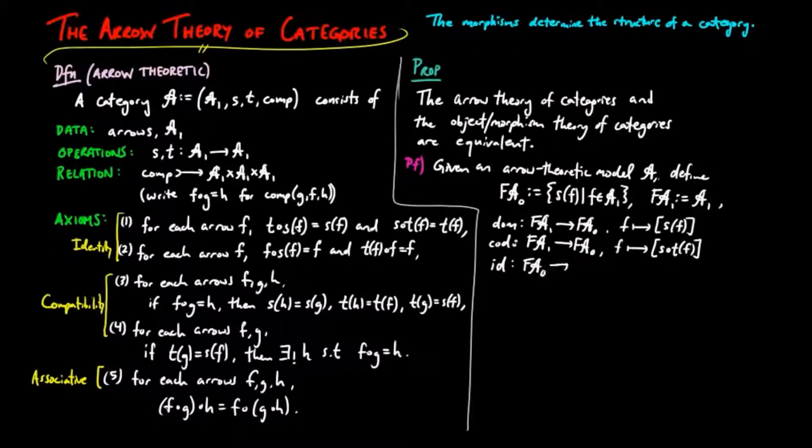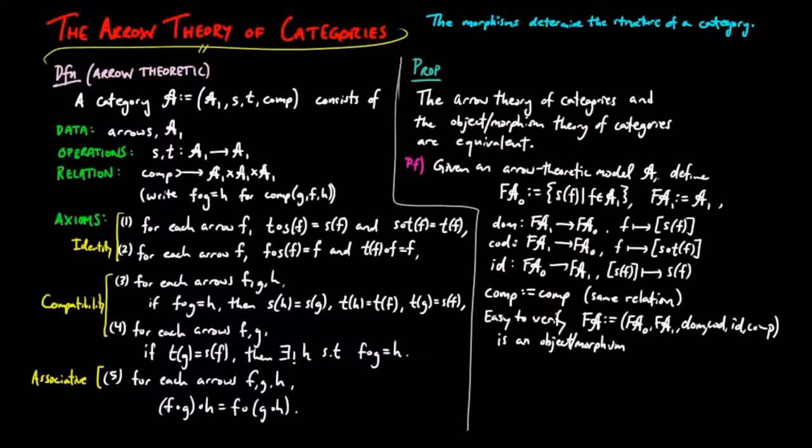And the identity is defined by taking the object sf to the morphism sf. The relation of composition remains the same. Then it is easy to verify that f, A is an object morphism theoretic model of a category.